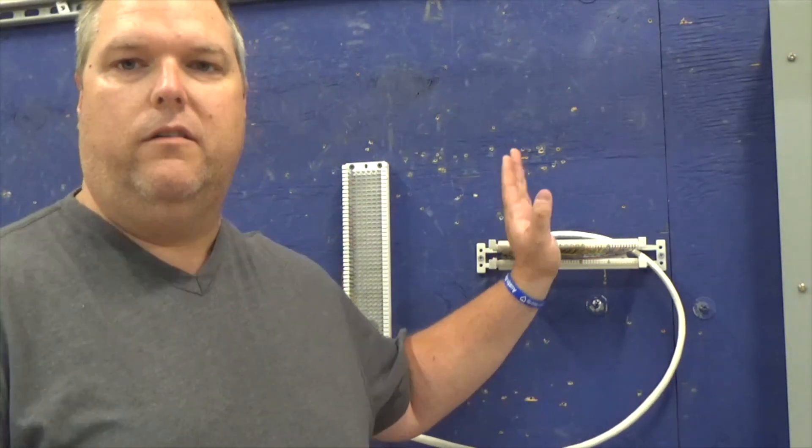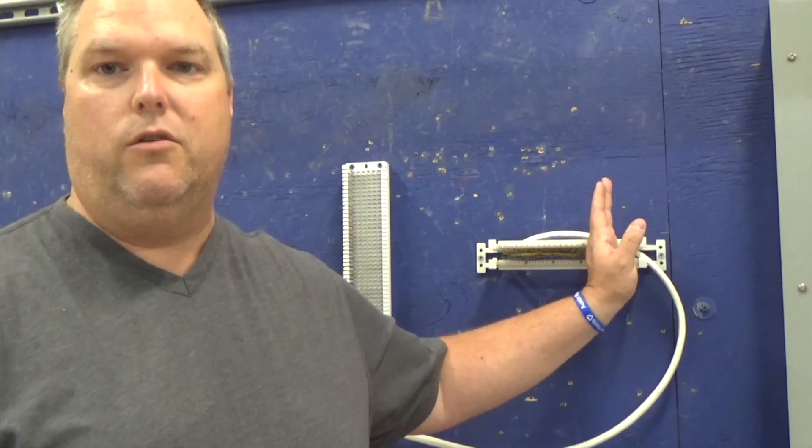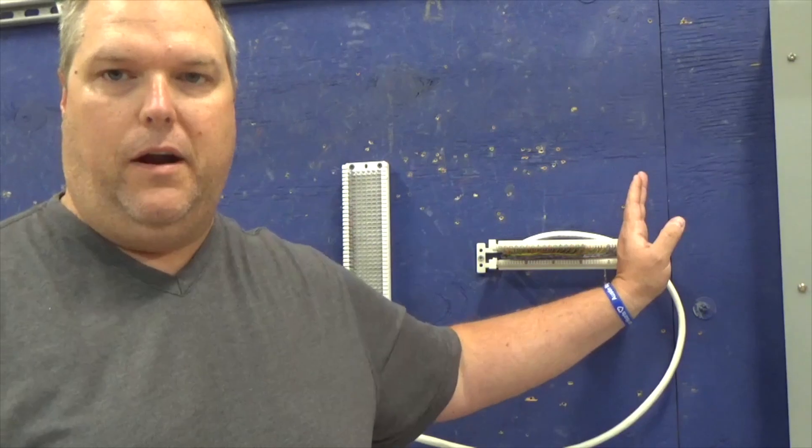So remember, to recap, 66 block, you start with your blue, your blue white or your white blue pair and you work your way down. So you're going to do your whites, your reds, your blacks, your yellows and your violets. When we look at it, we're going to start with our white pair, then we're going to go to our red pair, then we're going to go to our black pair, then we're going to go to our yellow pair, then we're going to go to our violet pair.